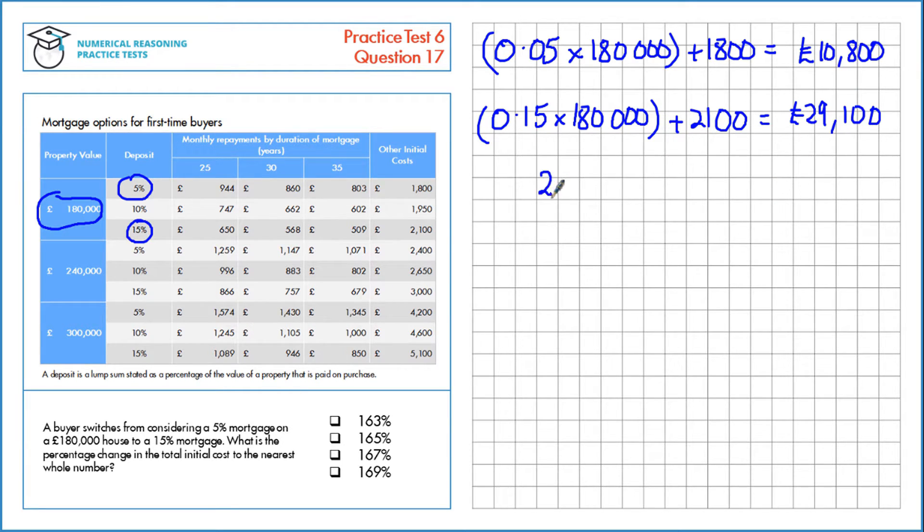This is the new value here, so that comes first, 29,100. Subtract 10,800, the initial value. And divide by the initial value again. Finally, to make this a percentage, multiply by 100. That's approximately a 169% increase, which is answer 4.